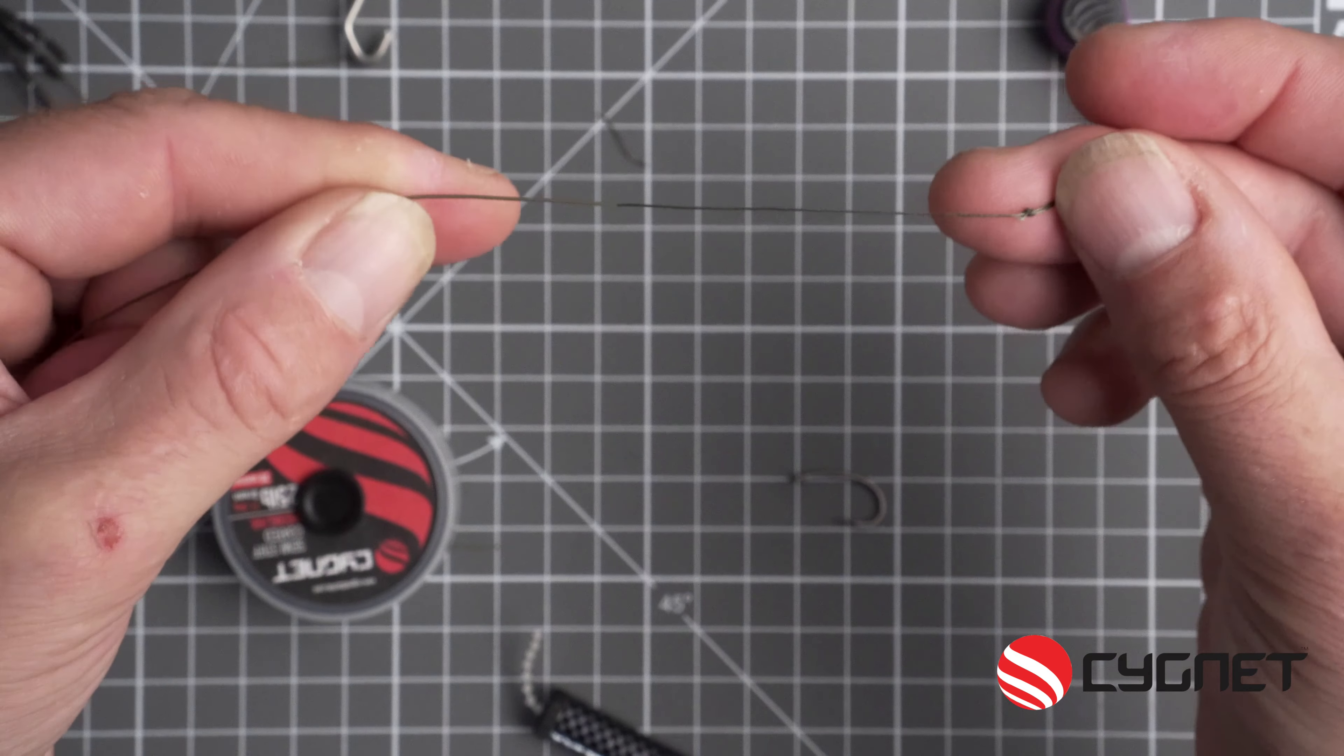Now pick a hook. I'm using the Cygnet curve shank barbless size 8. Mega sharp hooks lads and lasses, these are very sharp indeed so be careful.